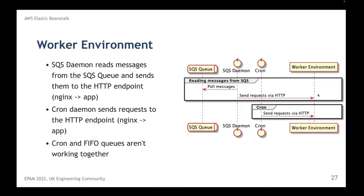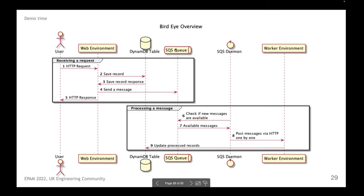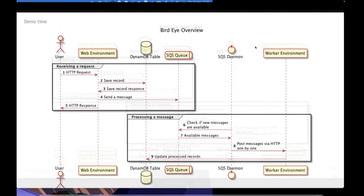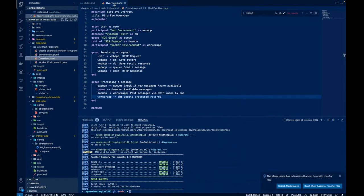If your application in the worker environment doesn't receive any messages but needs to run work on a regular basis, you can use cron. It works in a very similar way — it just sends requests via HTTP like an HTTP GET request. Demo time! I'll write a very simple application which receives HTTP requests, stores them in a DynamoDB table, and also sends messages to an SQS queue. A second worker application will check messages in the queue and update records in the DynamoDB table.